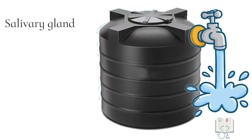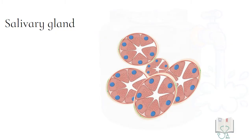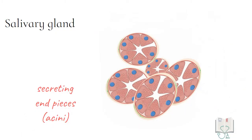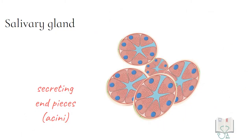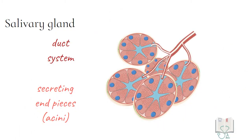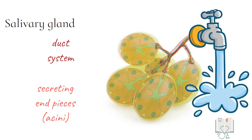Structurally, salivary glands have two components: the secreting end piece or the acinus, which produces the saliva, and the duct system, which carries the saliva from the acinus to the oral cavity. This makes their arrangement similar to a bunch of grapes.